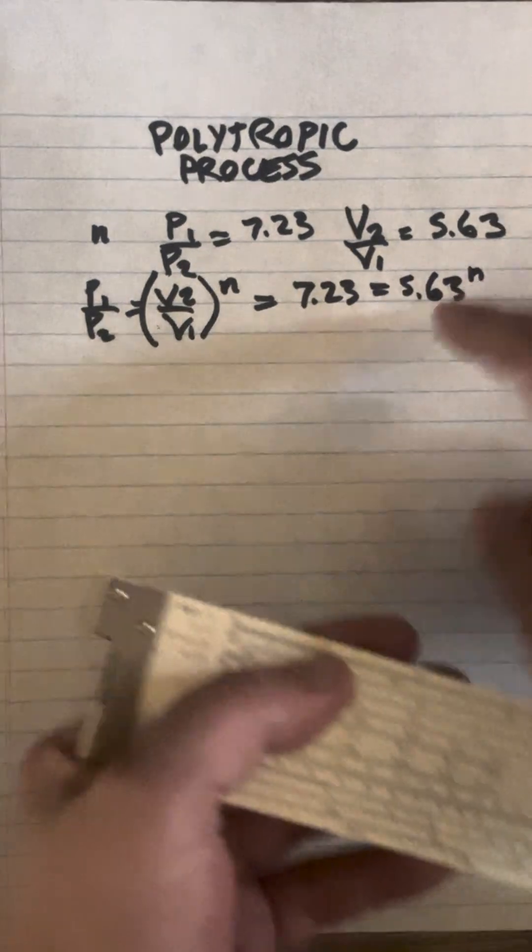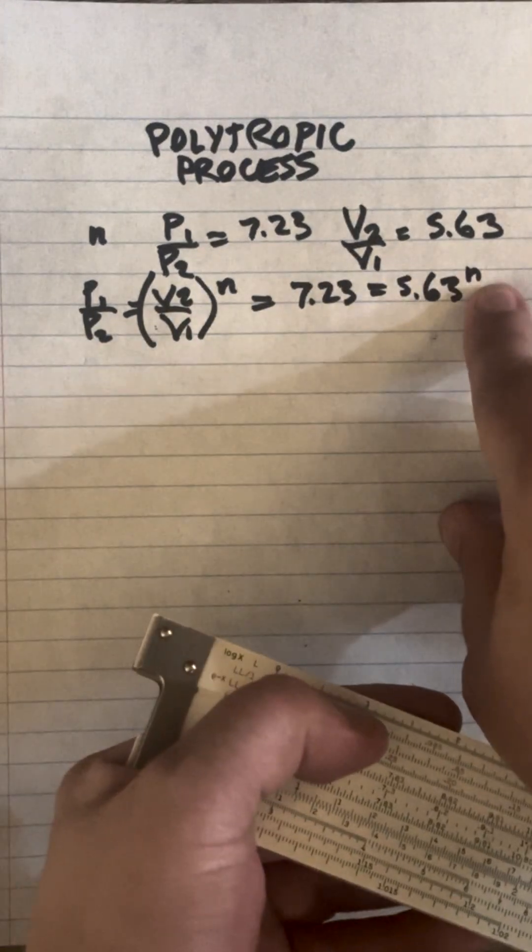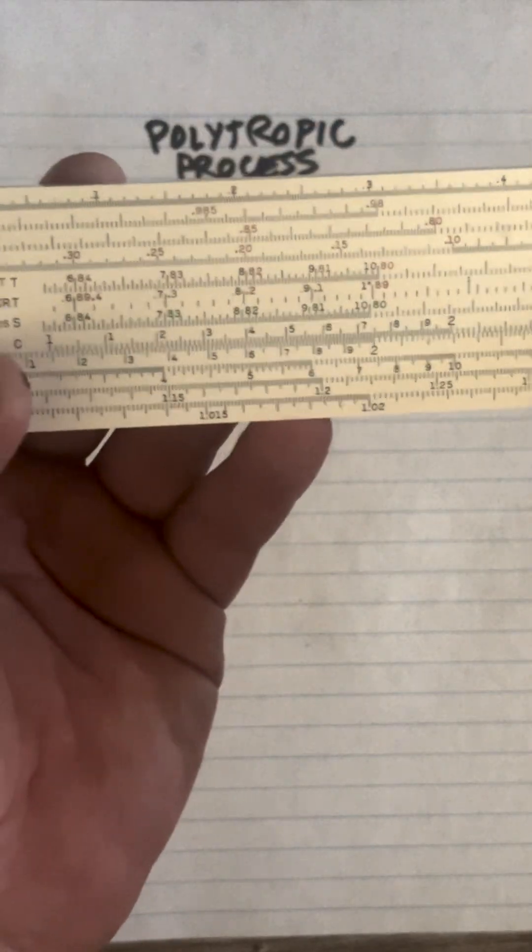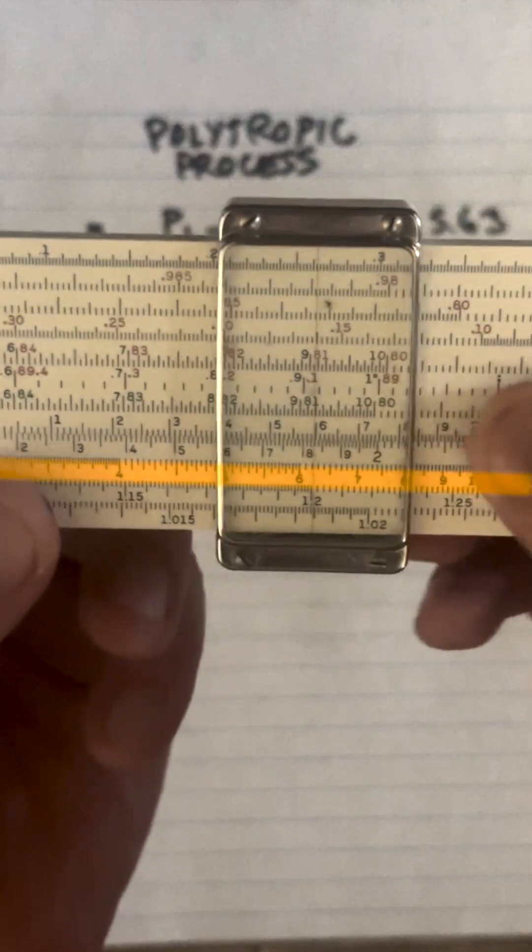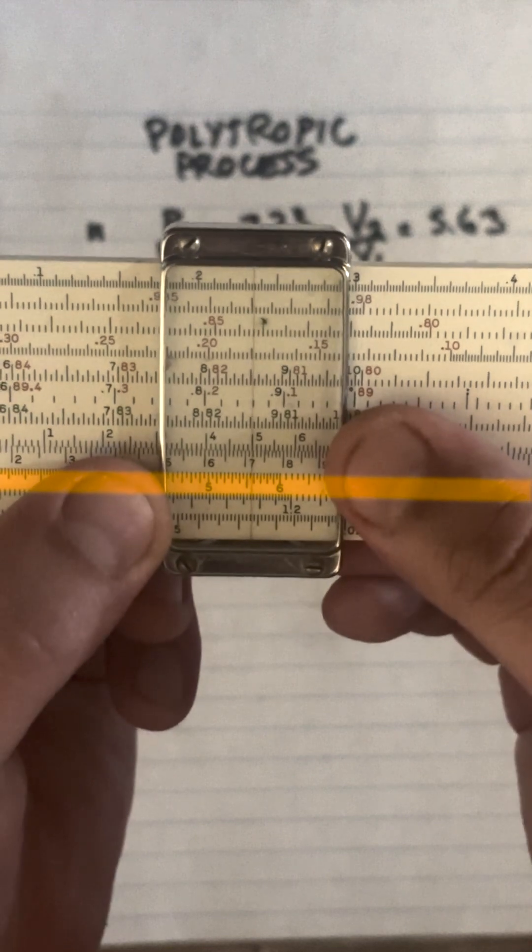We'll set our left index to 5.63 on the ll3 scale. I'm going to take my hairline and find 5.63, then place the left index right at the hairline.